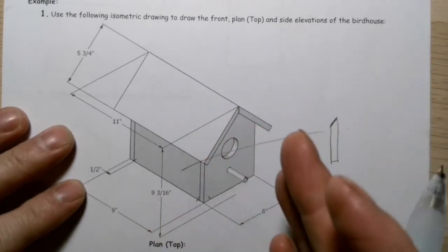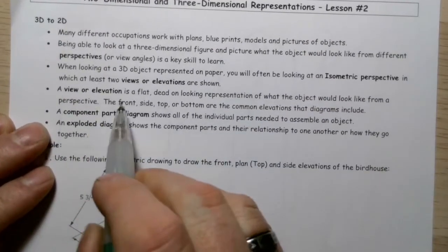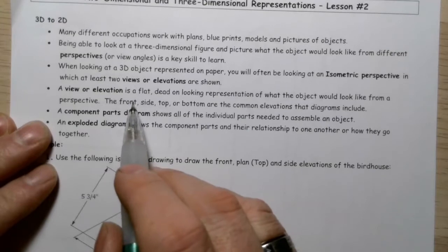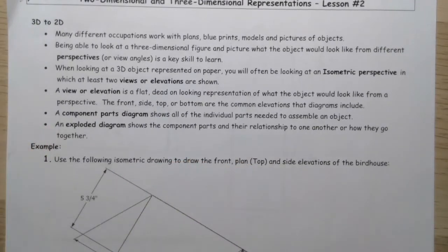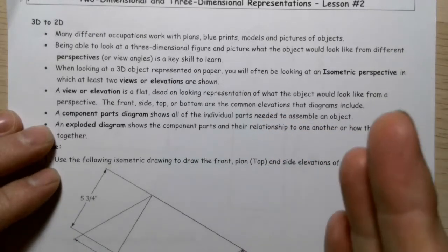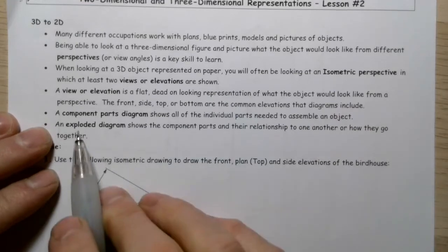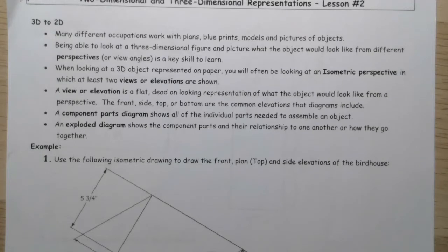A view or elevation is a flat, dead-on representation of what the object looks like — directly from the front, directly from the side, or directly from on top. On the other hand, a component part is a diagram that shows you all of the different individual pieces separated from each other so that you can see what all the pieces are that you need to put together to create that object.